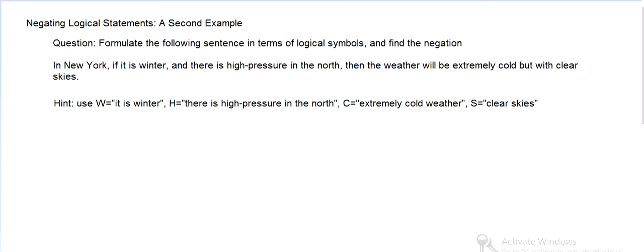And we can turn this into a logical sentence. We can symbolize W means it's winter, so we have it's winter, and there's high pressure, then the weather will be extremely cold. But that basically means and, it will be extremely cold, but also there will be clear skies.